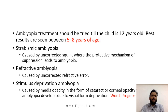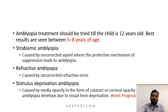Amblyopia treatment should be tried until the child is 12 years old, because the patient might lose the vision permanently if untreated. However, the best window for treatment is 5 to 8 years of age.